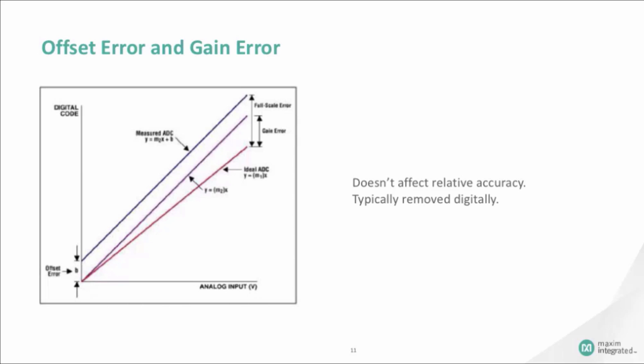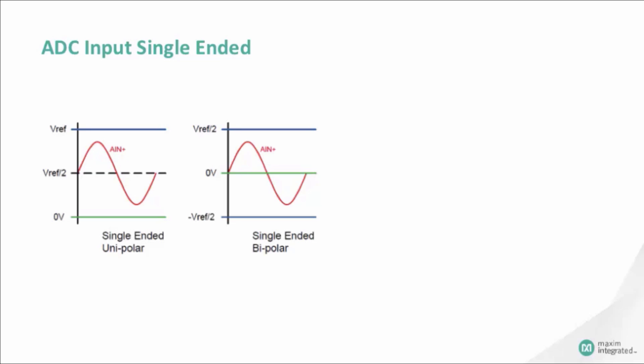The input signal of an ADC can be either single-ended or differential. For single-ended signals, it can be unipolar or bipolar. The unipolar input ranges from zero-scale, typically ground, to full-scale, typically the reference voltage. The bipolar signal swings above and below ground.